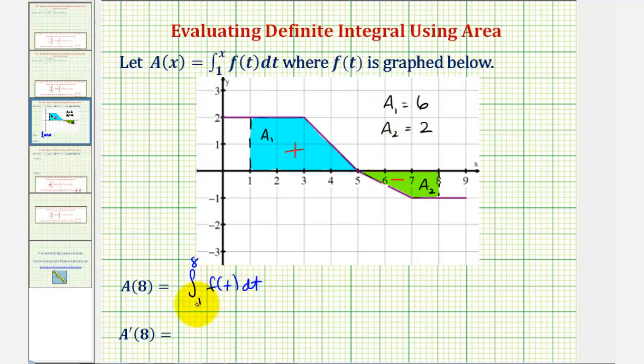So the integral of f of t from one to eight would be equal to positive six, and then plus a negative two, or just minus two, giving us a value of four.